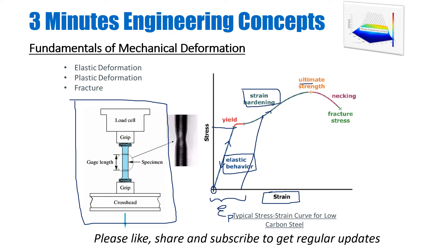If I keep pulling the sample, I will reach the peak of the stress-strain response, which is called the ultimate strength of the material. After this point, the material becomes unstable and shows necking, as seen in the figure on the left-hand side, until you reach the point of complete fracture.